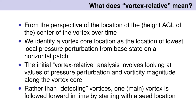So what does vortex-relative mean in this context? From the perspective of the location of the vortex core over time — I identify the vortex core location as the location of the lowest local pressure perturbation from base state on a horizontal plane. The initial vortex-relative analysis involves looking at values of pressure perturbation and vorticity magnitude along the vortex core. Rather than detecting vortices, I'm really just tracking them using a vortex seed location.